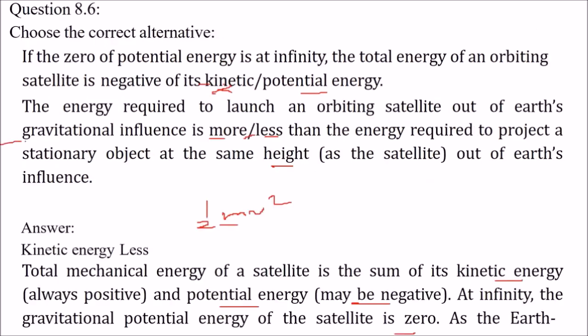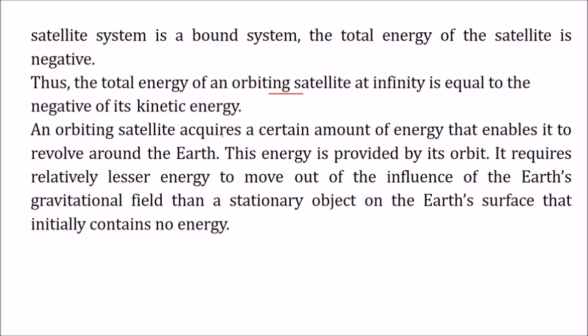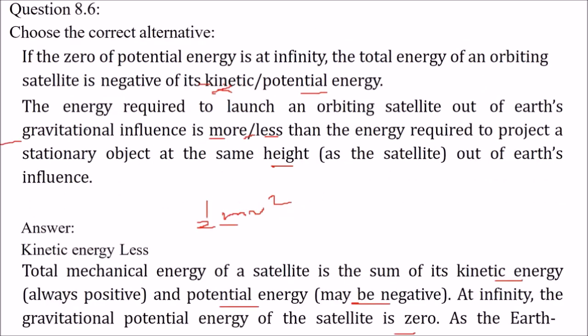Agla jo hai: ek orbiting satellite yeh energy leta hai jisse woh revolve karta hai earth ke round. Isko apni orbit se energy milti hai. Toh usko thodi kam energy chahiye taaki woh earth ke gravitational influence se bahar ja sake, kyunki jo stationary object hai woh surface pe — uske paas koi energy hoti nahi. Isliye the energy required to launch an orbiting satellite out of earth's gravitational influence is less than the energy required to project a stationary object at the same height out of earth's influence.